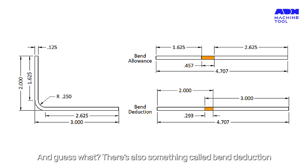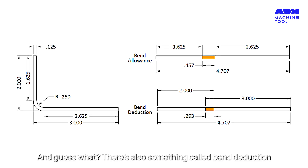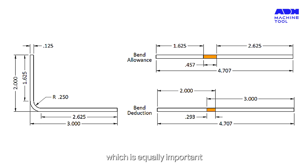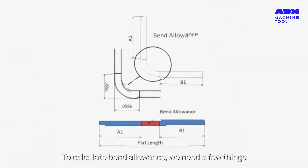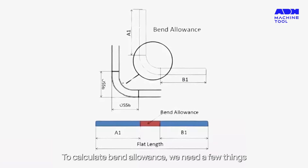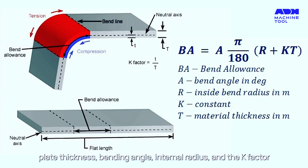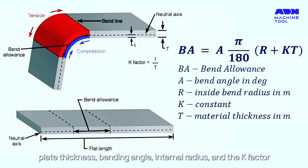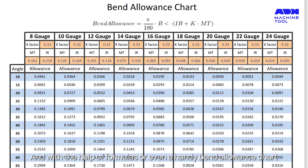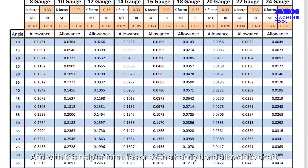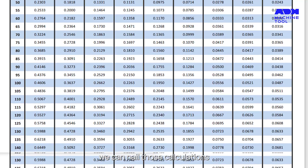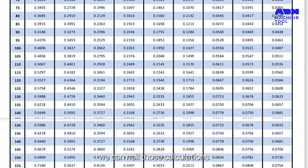And there's also something called bend deduction, which is equally important. To calculate bend allowance, we need a few things: plate thickness, bending angle, internal radius, and the K factor. And with the help of formulas or even a handy bend allowance chart, we can nail those calculations.